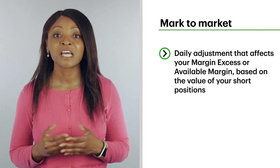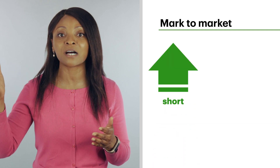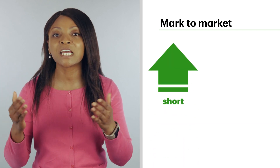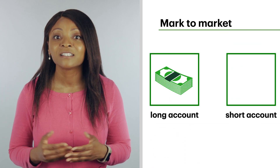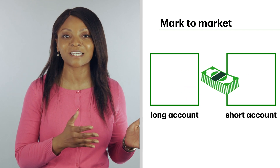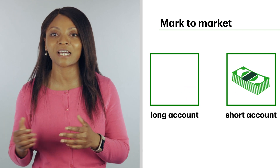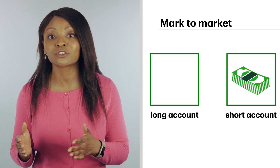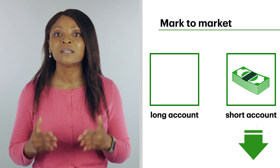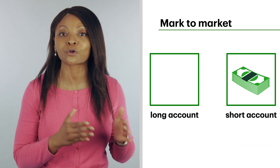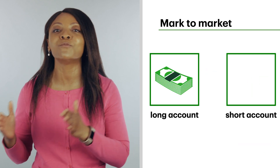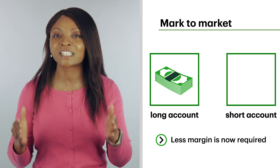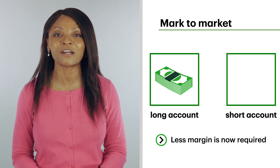If your short positions move up in value — meaning you're losing money on your trade — then cash is moved from your long account to your short account. But if your short stock goes down in value, some of the cash that you can't touch in your short account is now moved to your long account. This is because less margin is now required.